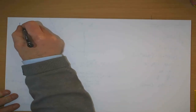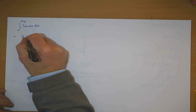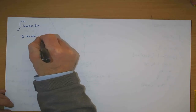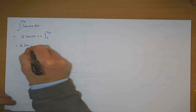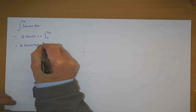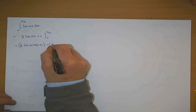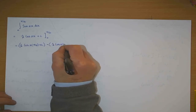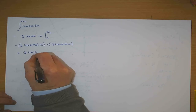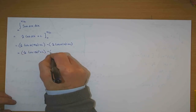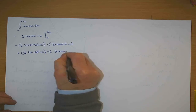The integral of sine 2x dx from zero to pi over two. Integrating sine 2x gives minus a half cos 2x plus c, from zero to pi over two. So that's minus a half times the cosine of twice pi over two plus c, minus minus a half times the cosine of twice zero plus c.